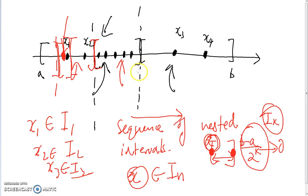So the subsequence can be made as close as we like to the point in the intersection of all the nested intervals — meaning it converges. This is just a general outline of the proof. I'll either write it up formally in the next video, or post it on my blog with a link in the description. That's all for this video, thanks for watching.